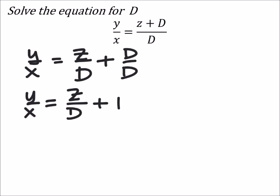What this does now is it's taken this equation and now I've at least minimized the number of D's I have, which is the variable that I'm trying to solve for.